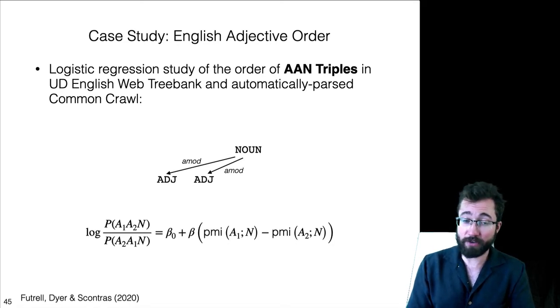And we model their order using a logistic regression that looks like this. So, you're trying to predict whether the triple goes in the order A1, A2, N versus A2, A1, N. And you predict that by looking at the PMI between A1 and the noun, comparing that to the PMI of A2 and the noun.